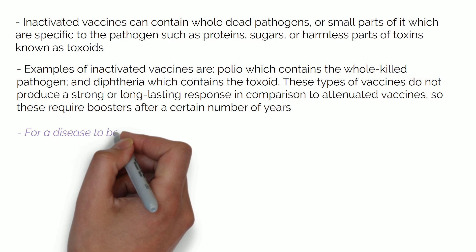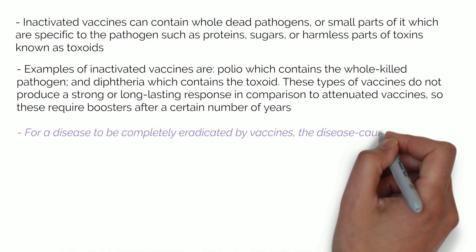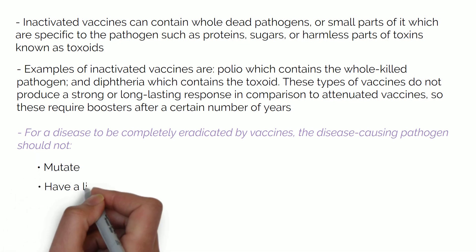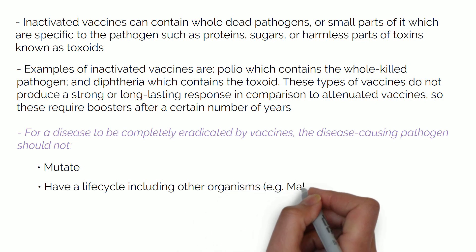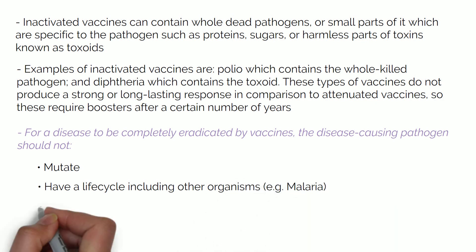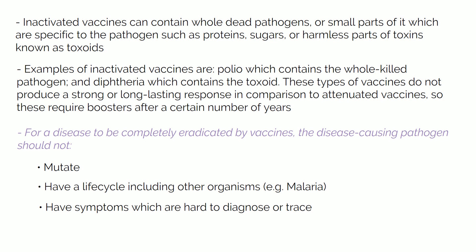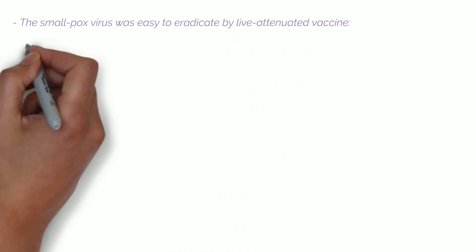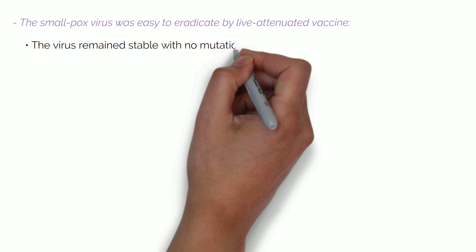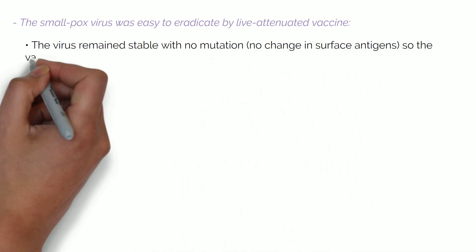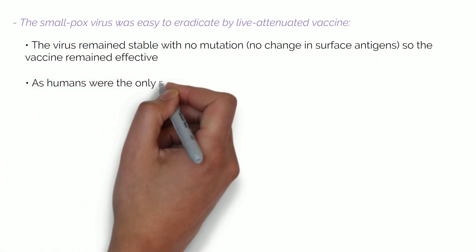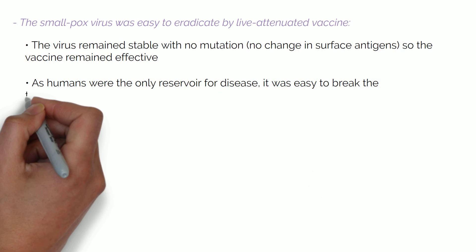For a disease to be completely eradicated by vaccine, the disease-causing pathogen should not mutate, should not have a life cycle including other organisms — for example malaria — and should not have symptoms which are hard to diagnose or trace. The smallpox virus was easy to eradicate by live attenuated vaccine because the virus remained stable with no mutation, meaning no change in surface antigens, so the vaccine remained effective. Also, as humans are the only reservoir for the disease, it was easy to break the transmission pathway.